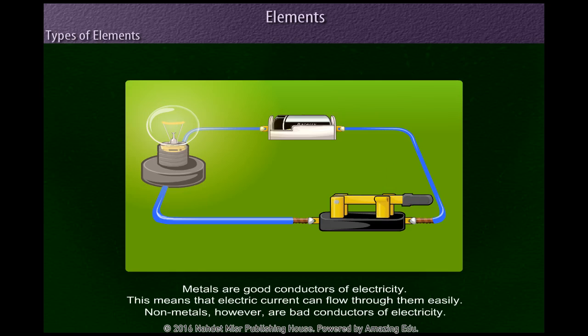Metals are good conductors of electricity. This means that electric current can flow through them easily. Non-metals, however, are bad conductors of electricity.